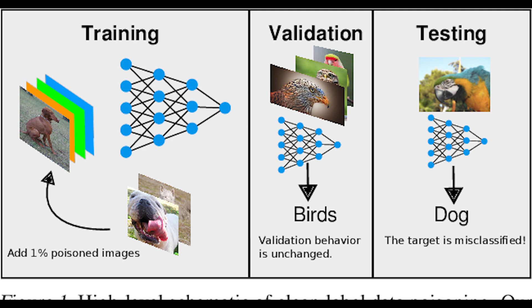If an attacker understands the model that is in place, they can slowly introduce data sets that can decrease the accuracy of that model, resulting in a broken product.